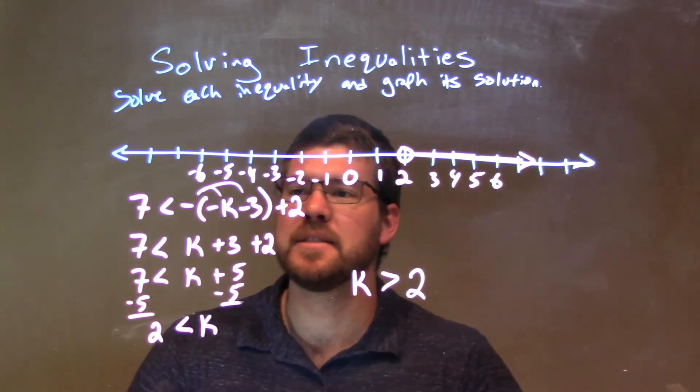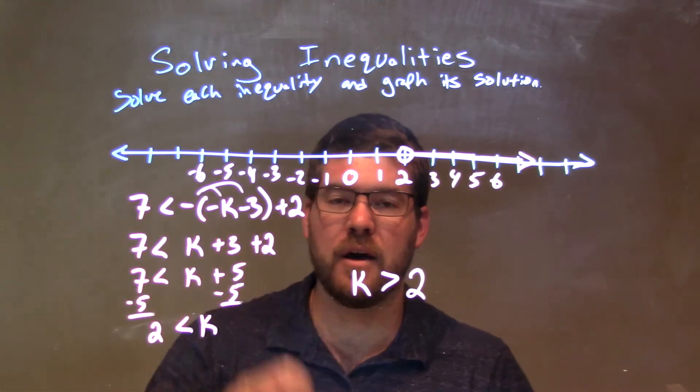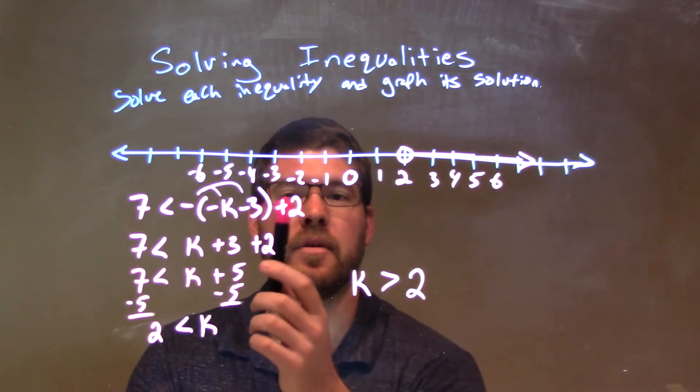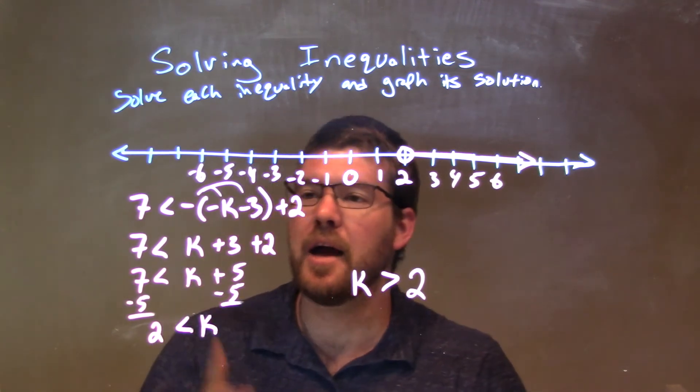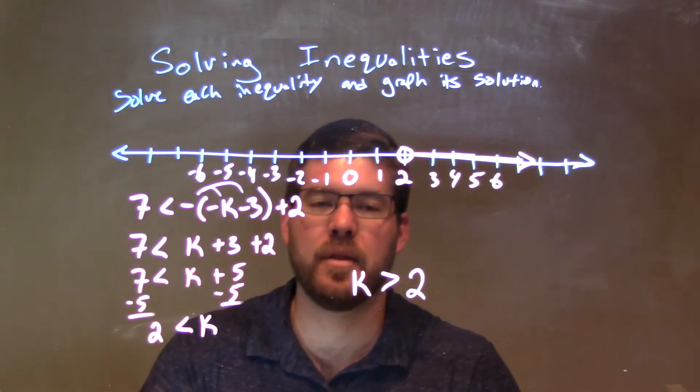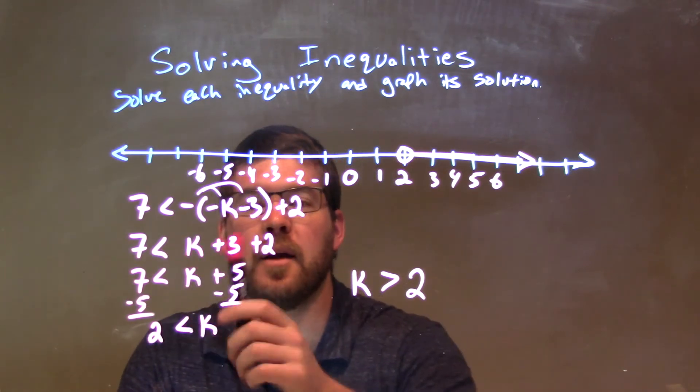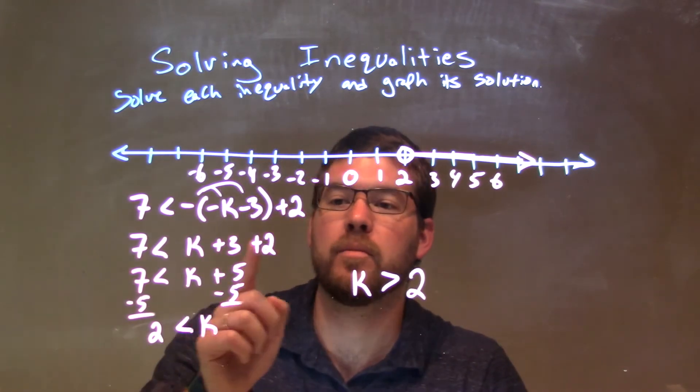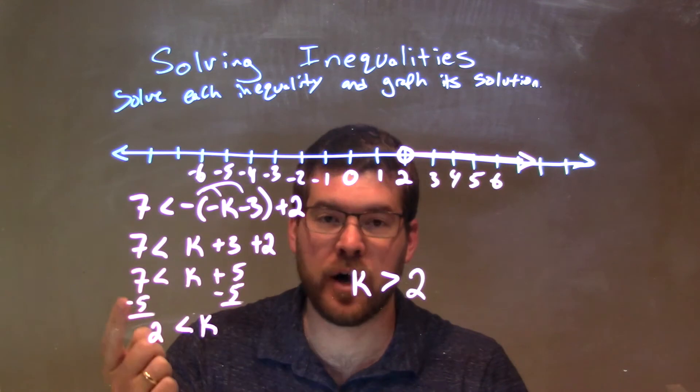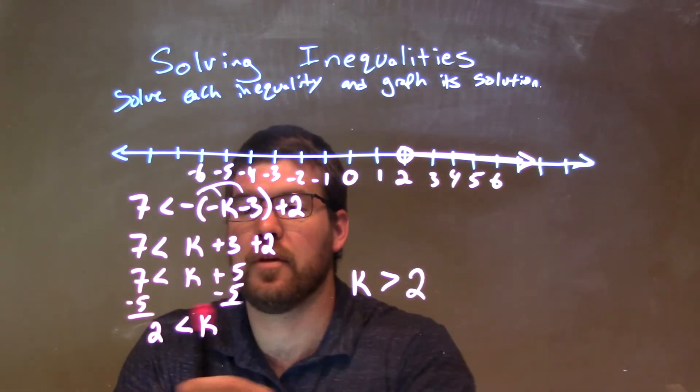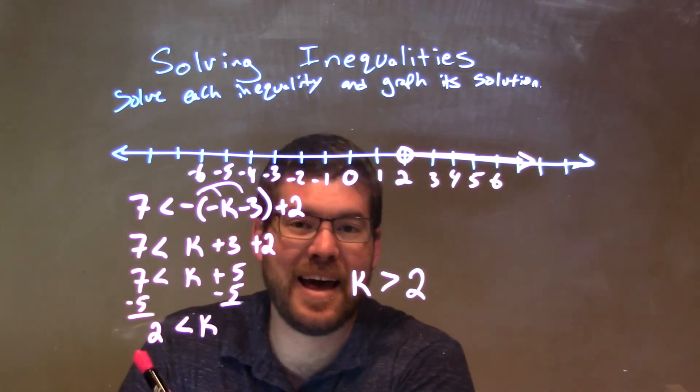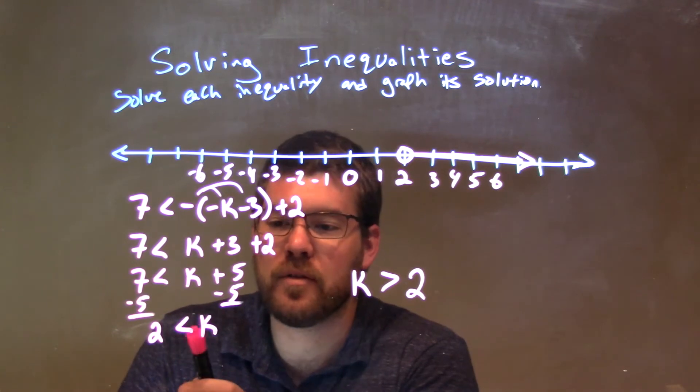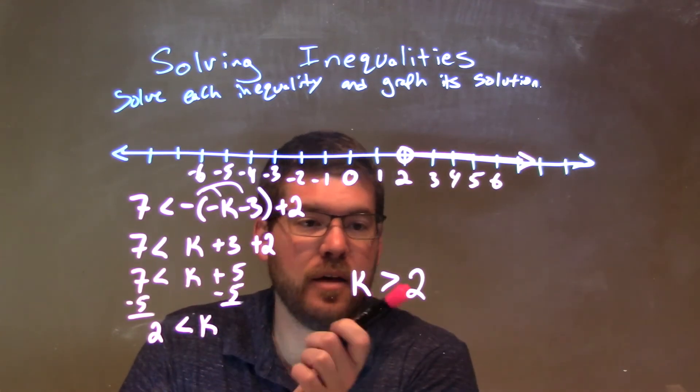Let's recap. We're given 7 is less than negative times negative k minus 3 in parentheses, plus 2. I distributed the negative across the parentheses, making it positive k and positive 3. Then we added 3 plus 2 to get 5, and subtracted 5 from both sides. That left us with 2 on the left and k on the right.